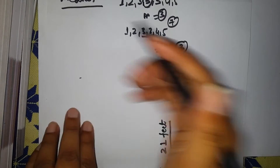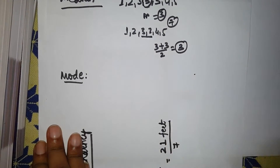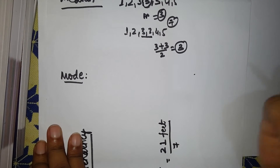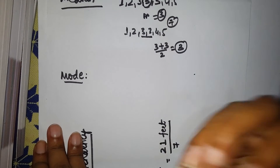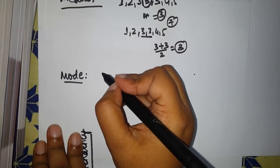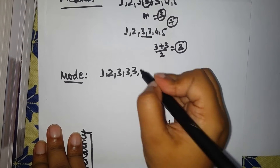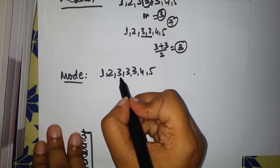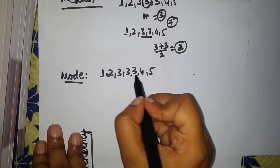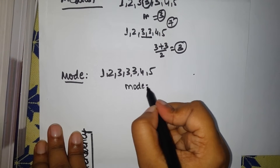Mode is the most repeated number — something which is very frequent. This is most commonly used in bimodal distribution. Take the distribution 1, 2, 3, 3, 3, 3, 4, 5. The most commonly repeated value is three, so the mode of this distribution is three. This covers the measures of central tendency.